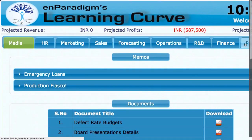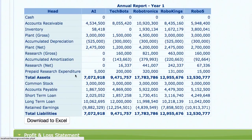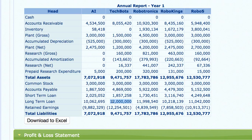Looking further down the balance sheet at common stock — this is the money Singhanya invested in the business. A key concern is long-term loans. The maximum long-term loan a company can avail over its lifetime is 1.2 crores. Tech Bots has already hit that limit, Robotronics is dangerously close and can borrow only about 1,460 rupees more, and Robo S is also very close. Robo Kings and AI have about another 20 lakhs before banks stop lending.